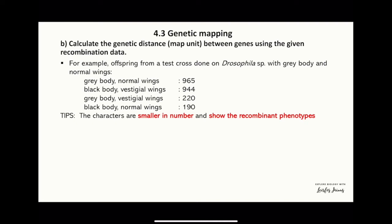For example, the offspring from a test cross done on Drosophila species with grey body and normal wings produced the following offspring: normal grey body with normal wings — 965; black body with vestigial wings — 944; grey body with vestigial wings — 220; and black body with normal wings — 190.